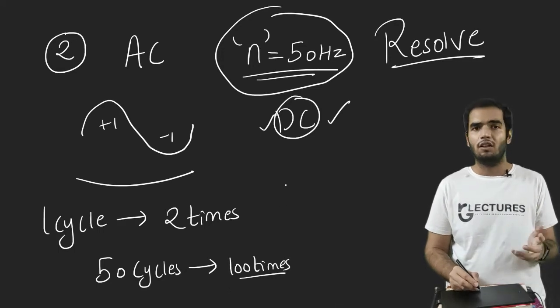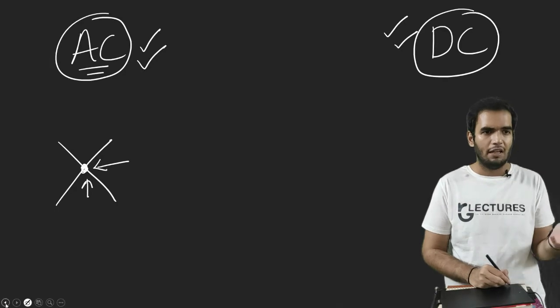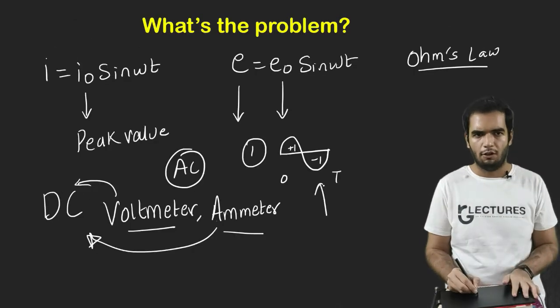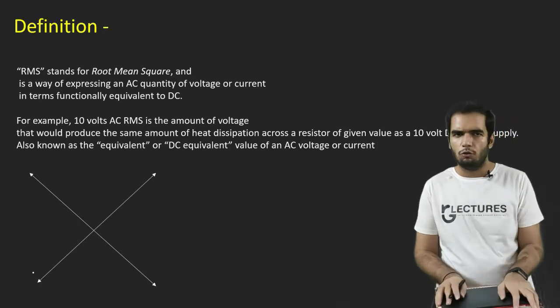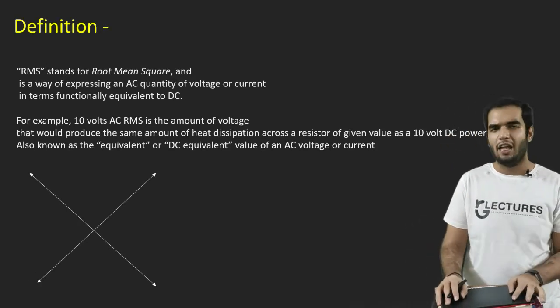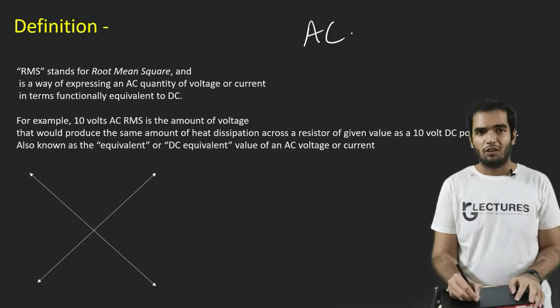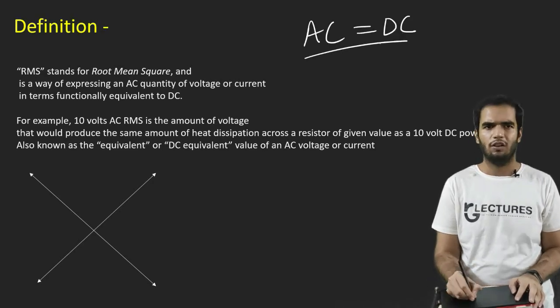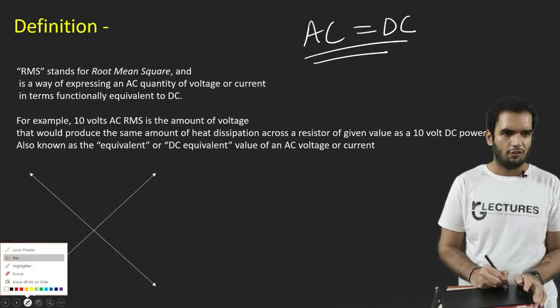So in the same way, DC ammeter, DC voltmeter cannot resolve this much of minute frequency. So that is also the reason it doesn't show any reading. And the second reason was average is always equal to zero. So scientists finally found a solution, which was the RMS value.